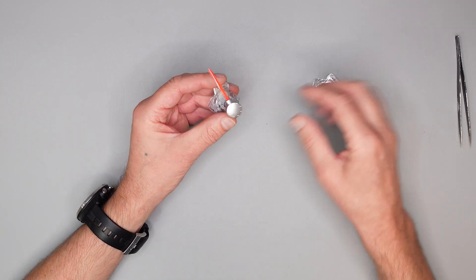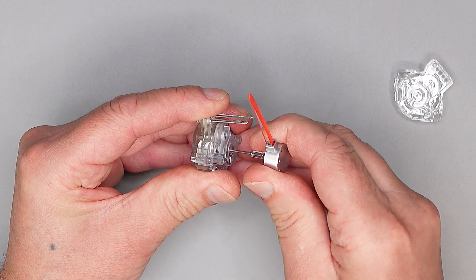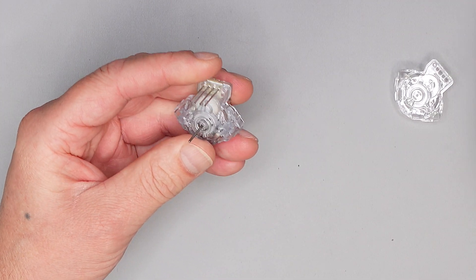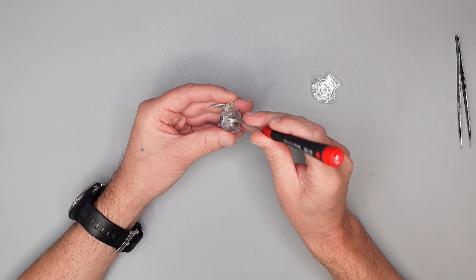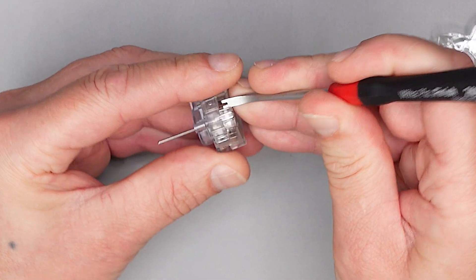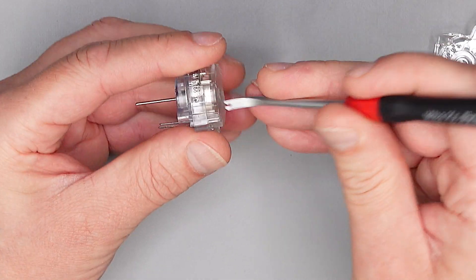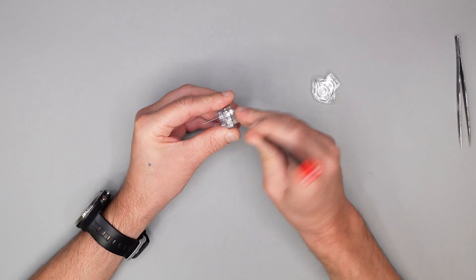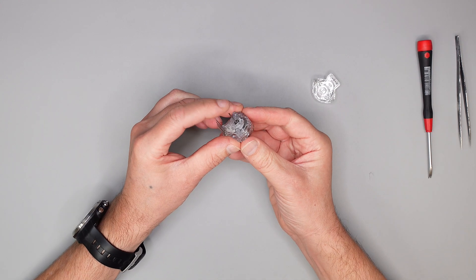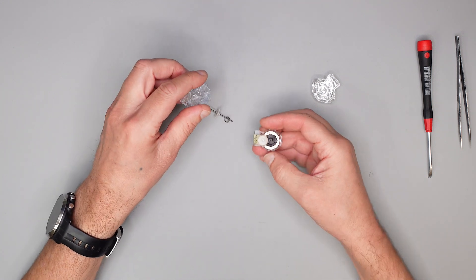Zeige ich euch jetzt einfach mal. So, wir müssen die Kappe lösen, die ist auch nur draufgeklebt. Dann gehen wir mit meinem Lieblings-Tool, haben wir hier drunter, anhebeln das ein wenig auf. So, hier kommen wir leicht drauf drücken, dann hat man die obere Kappe ab.